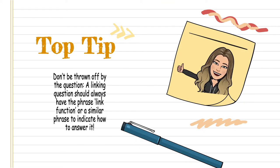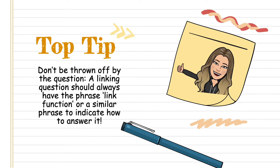Top tip: please do not be thrown off by the question. A linking question should always have the phrase 'link', 'function', or a similar phrase to indicate how to answer it. If it has that phrase, you know you're looking for that sentence straight away, and you're going to provide two quotes — one sentence that links back and another that links forward.